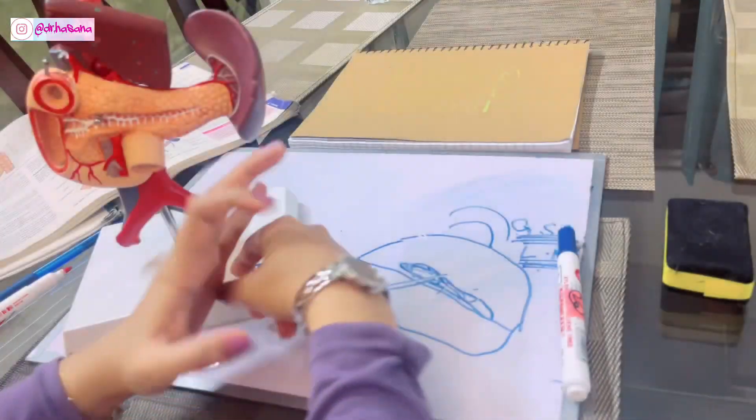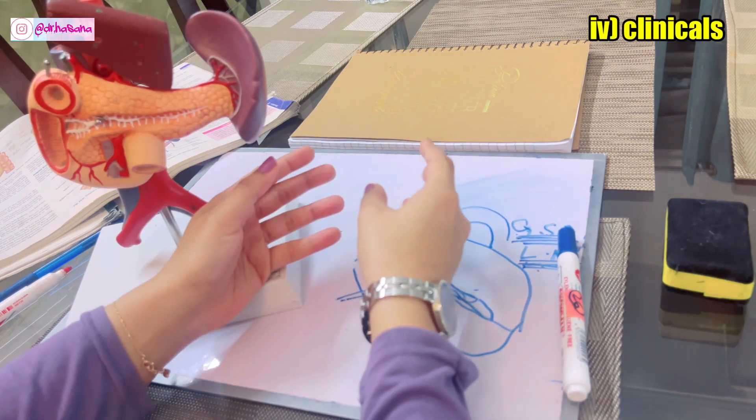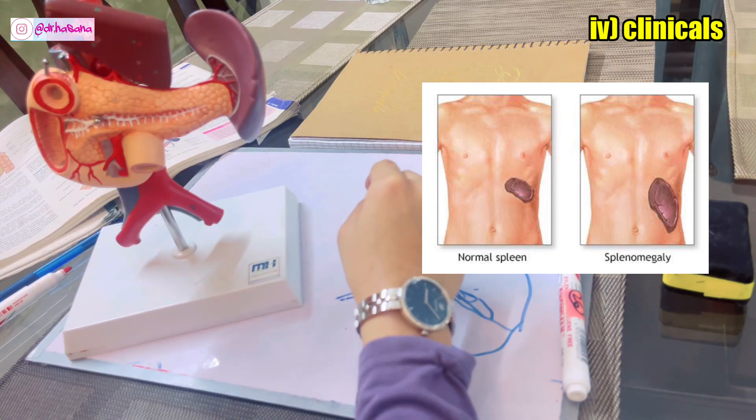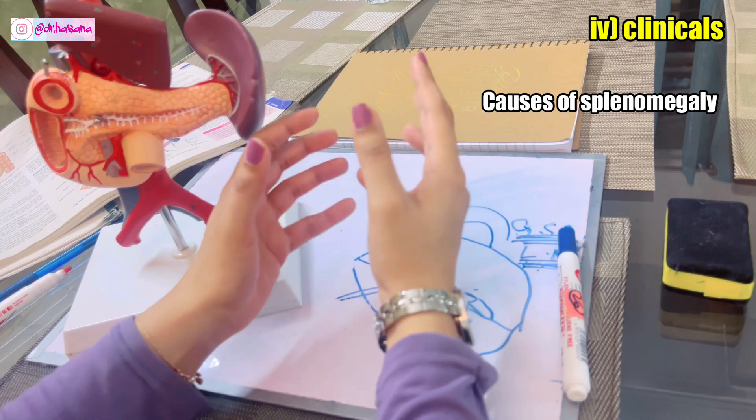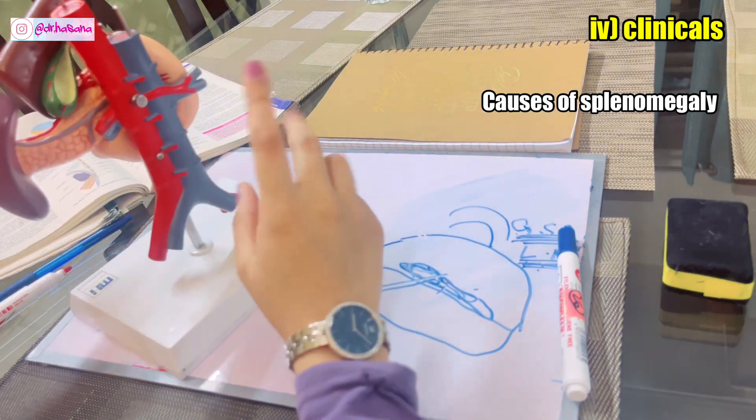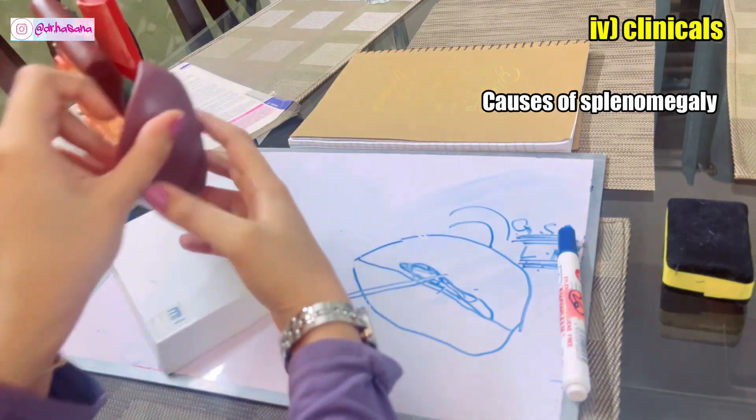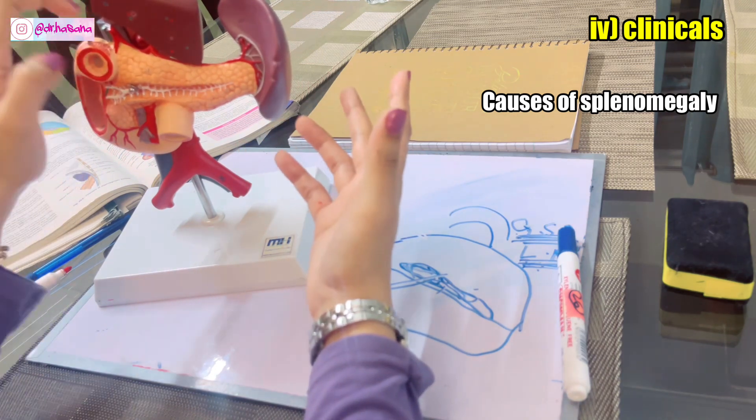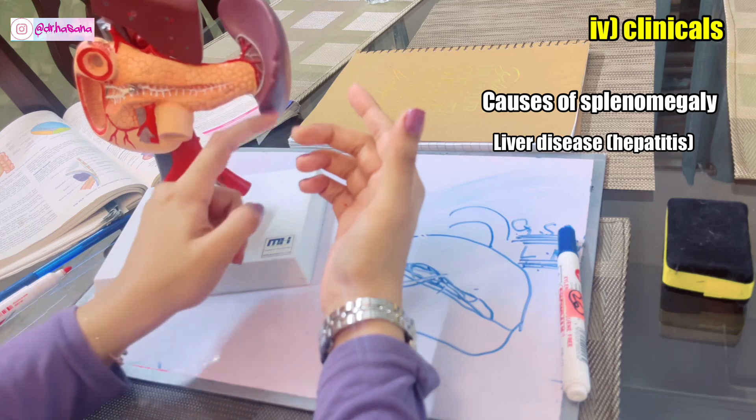Now, let's talk about the clinicals. First important clinical is the palpation of spleen which I've already talked about that you cannot normally palpate it unless it's twice its normal size. And if it is enlarged, it is known as splenomegaly. What are the causes of splenomegaly? Anything that causes backflow of blood in the portal vein, such as liver diseases like cirrhosis, can cause splenomegaly.